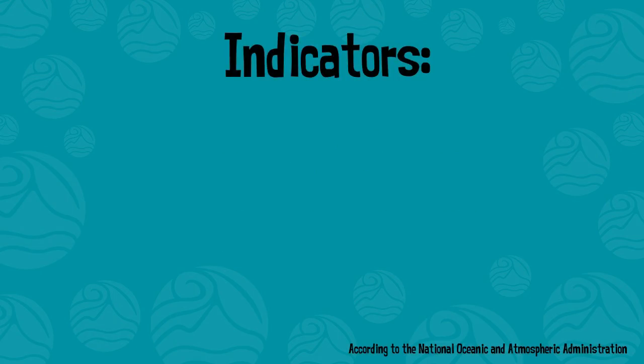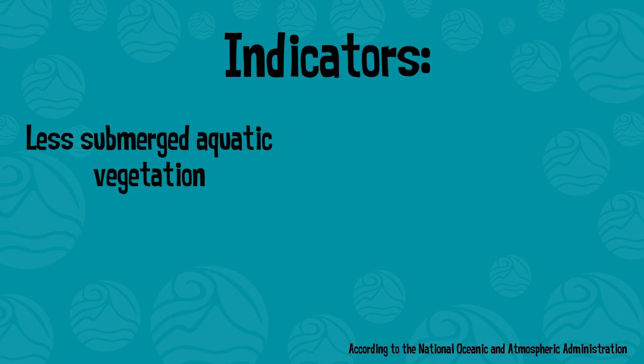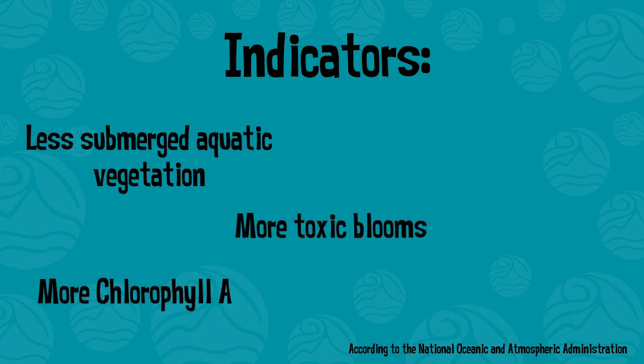There are five indicators of eutrophication, according to NOAA: less submerged aquatic vegetation and chlorophyll A, more toxic blooms and macroalgae, and the lack of dissolved oxygen.